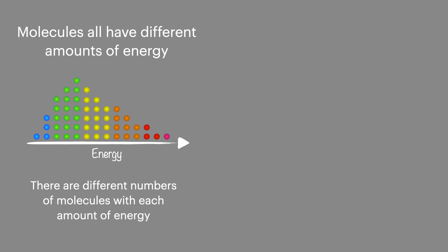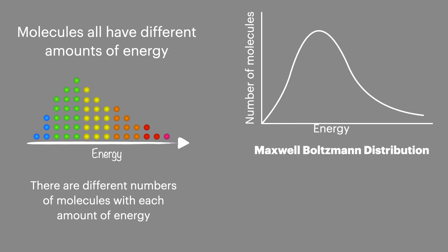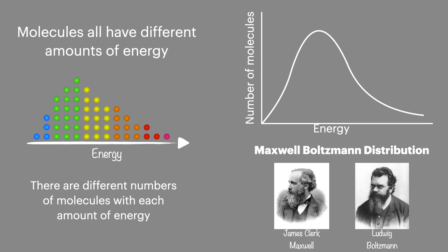Now instead of drawing out the molecules individually they can be represented on a curve. This is called a Maxwell Boltzmann distribution curve, named after two scientists James Maxwell and Ludwig Boltzmann.